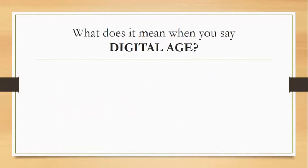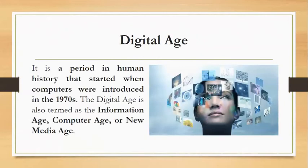What does it mean when we say digital age? It is a period in human history that started when computers were introduced in the 1970s. The digital age, also termed as the information age, computer age, or the new media age. An important thing to note is that the meaning of digital age will continue to change over time, as new technologies or devices will be developed.